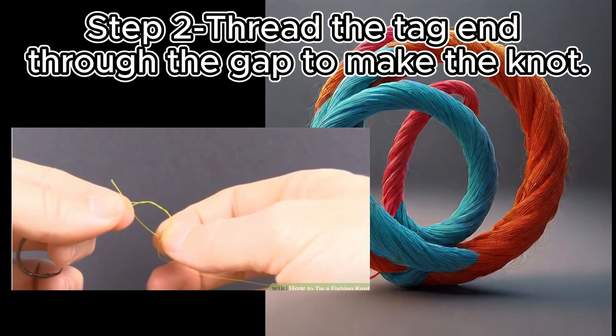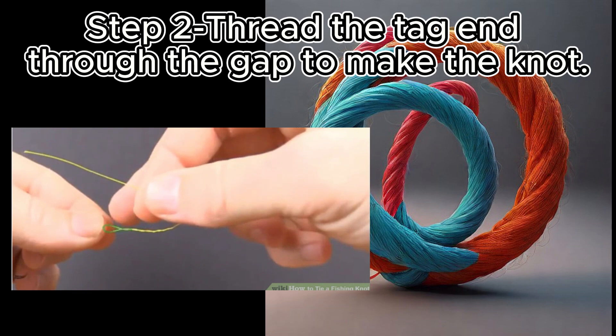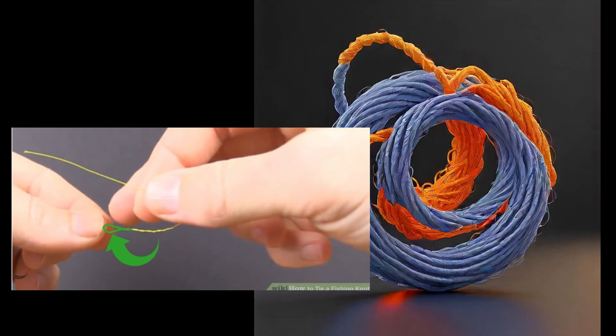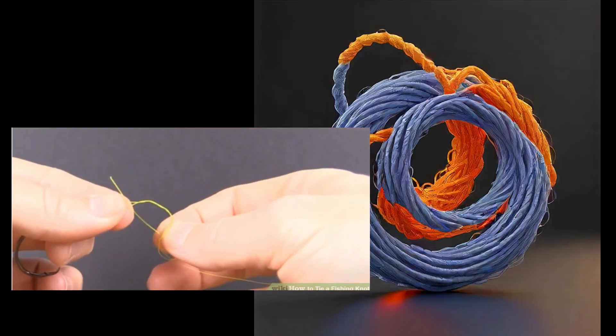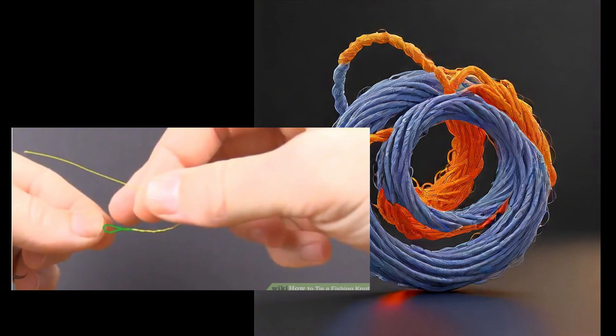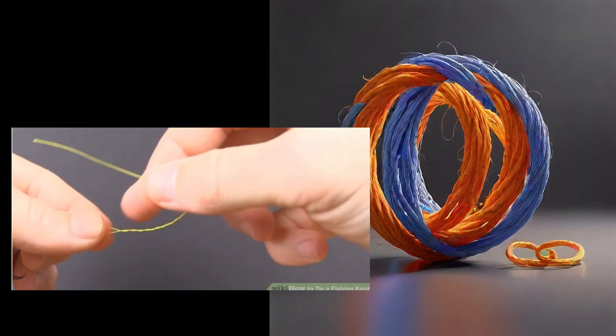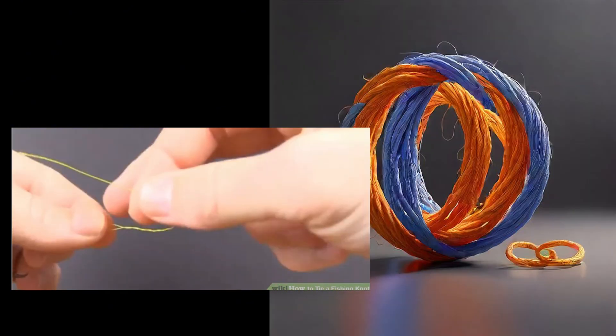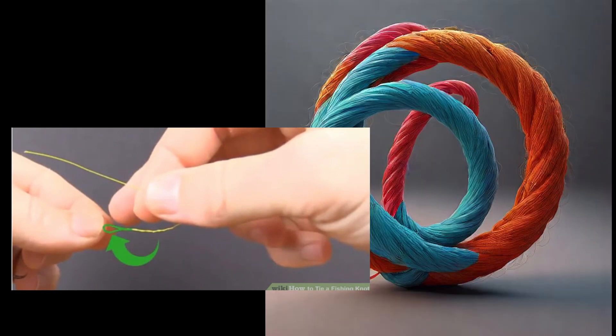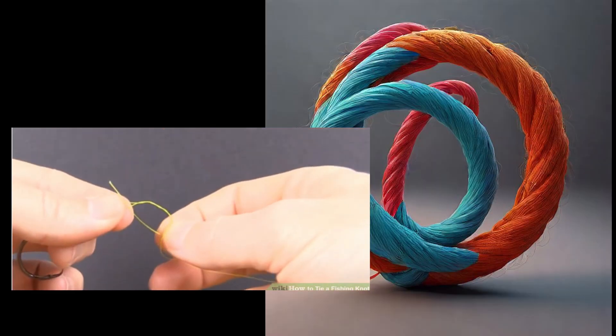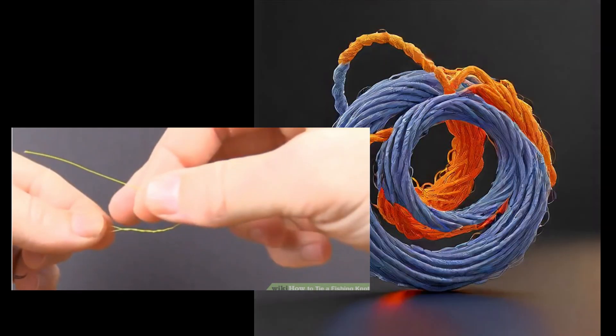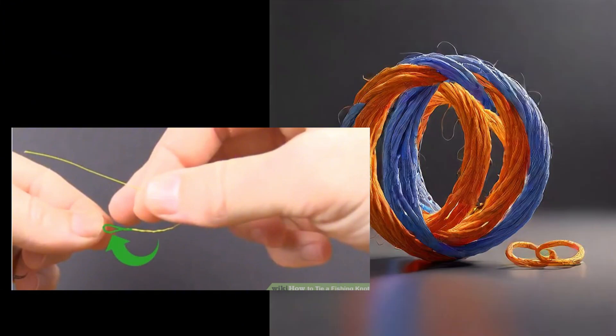Step 2: Thread the tag end through the gap to make the knot. Thread the tag end through the gap above the hook eye made in Step 1. Pull the knot tight. A little moisture may help. Wet it in your mouth to provide some lubrication. Clip off the excess line above the knot, leaving 1/8 inch (0.3 cm) of line.